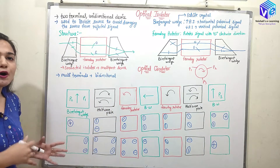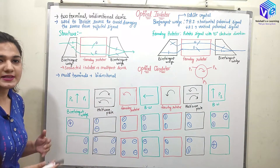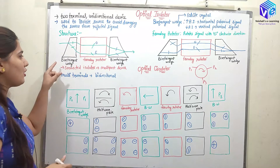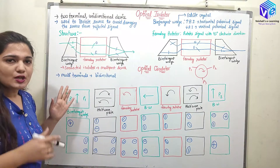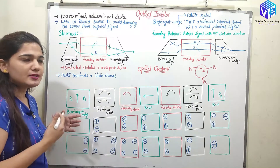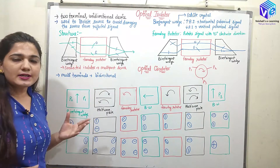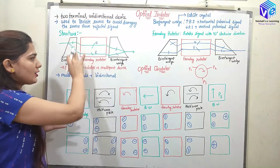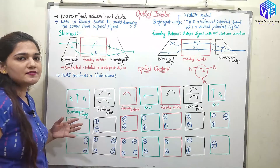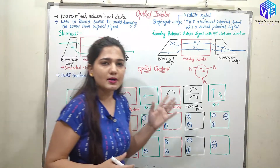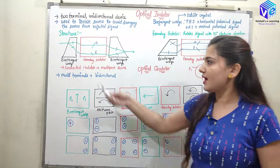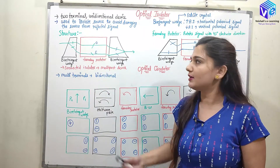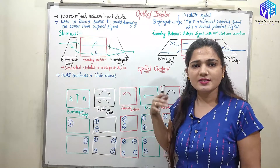Let's understand how it gives us this amazing functionality. The structure consists of the birefringent wedge. First of all we are going to see what is a birefringent wedge, what is a Faraday rotator, and what are their working principles. In the structure we have two birefringent wedges and in between we have the Faraday rotator. This is the full structure — the structure is simple.